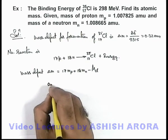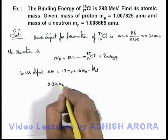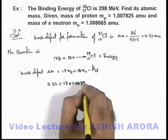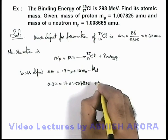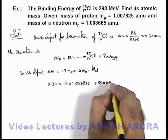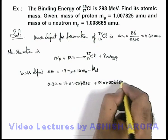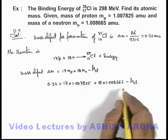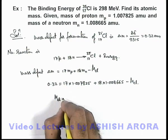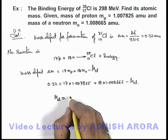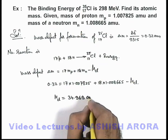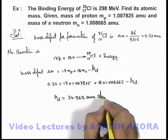If we substitute the values here, you can write it as 0.32 is equal to 17 into 1.007825 plus 18 into 1.008665 minus mass of chlorine nucleus. On simplifying this, the mass of chlorine nucleus will be 34.969 amu. That will be the answer to this problem.